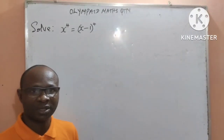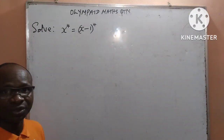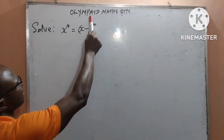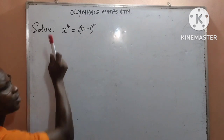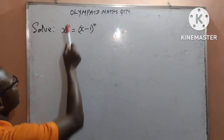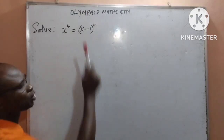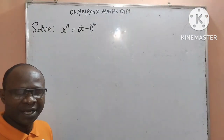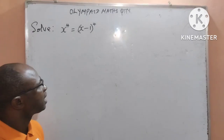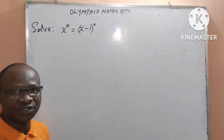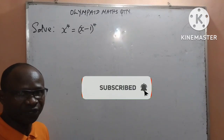Thank you, viewers. I am Tutor Clotus Okuli. In today's class, we shall be taking an Olympic math question as written on the board: to solve x to the power of 4 equal to x minus 1, all to the power of 4. I encourage you to watch the video to the end. If it is your first time stopping by, kindly subscribe to my channel for exciting videos.